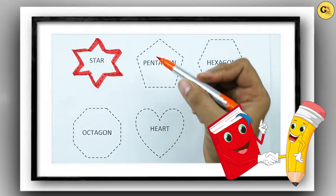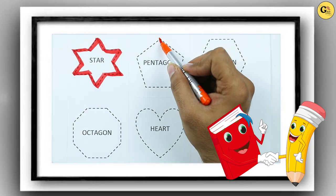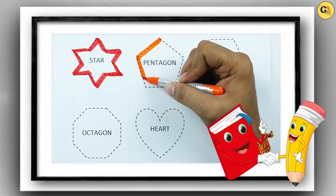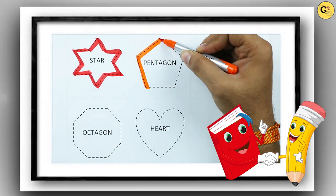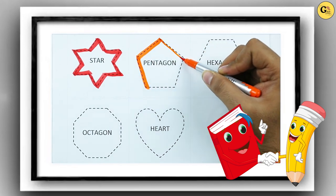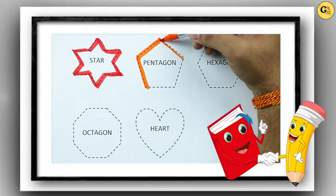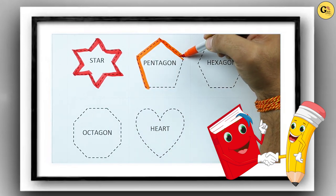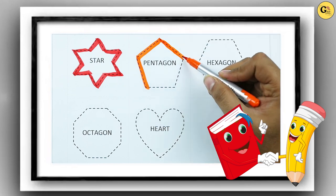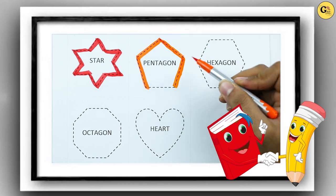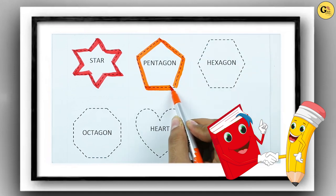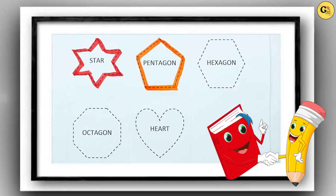Pentagon: one line, two line, three line, four line, five line. It's a pentagon.